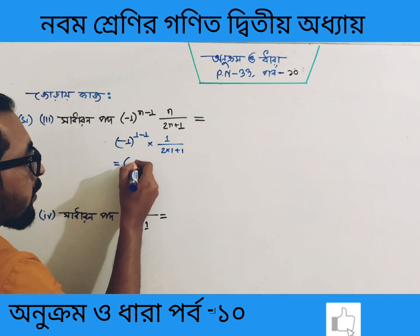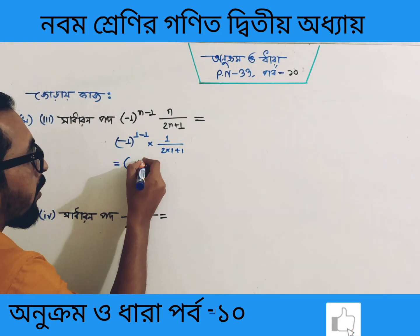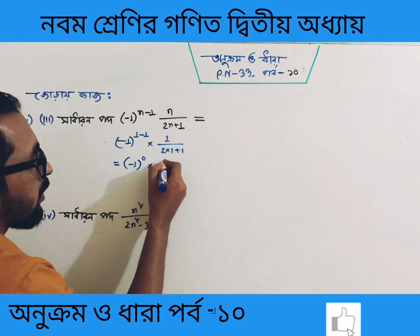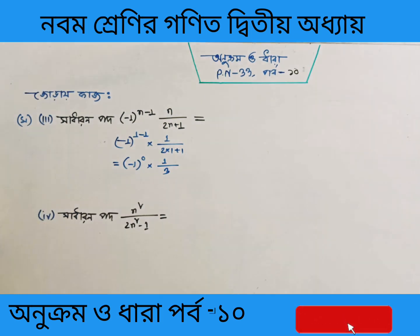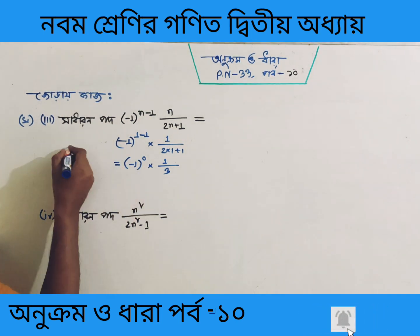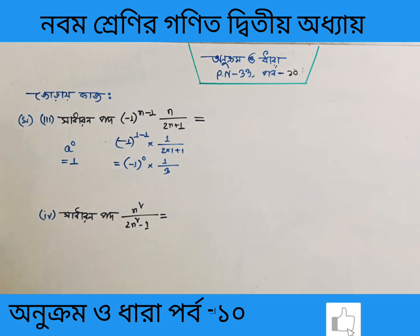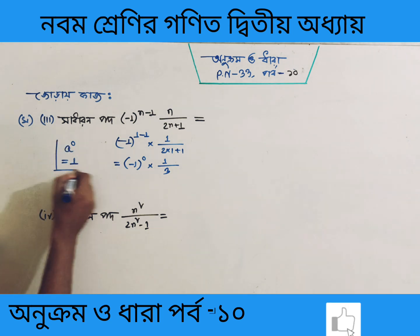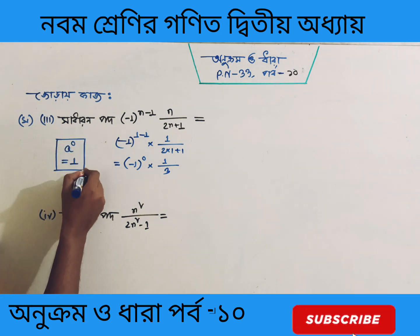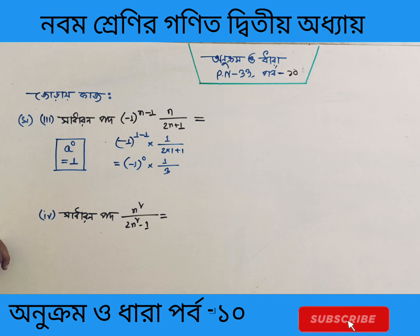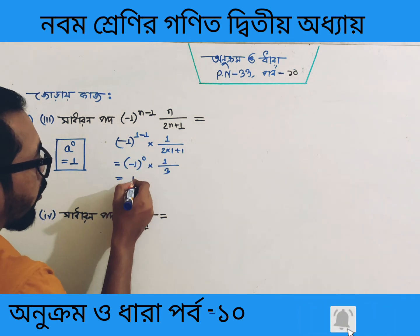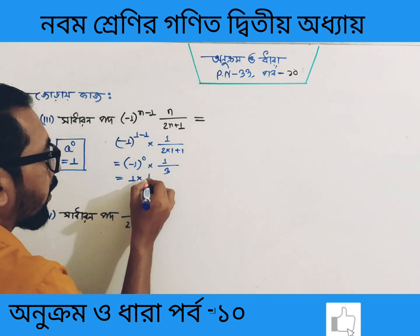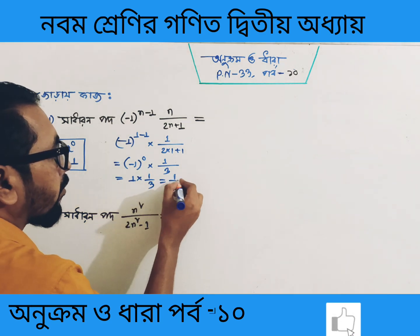That's right. Now, what is it? 1 to the power 0 — very interesting. 1 divided by 2 equals 3. What is it? 1 to the power 0 is 1. That is, 0 to the power 0. So, 1 to the power 0 is 1. So, 1 is 1 divided by 3.